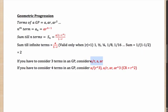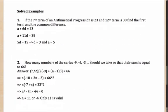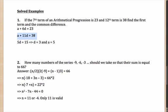Now let's look at some solved examples. If the seventh term of an AP is 23 and the twelfth term is 38, find the first term and the common difference. The seventh term gives A + 6D = 23, and the twelfth term gives A + 11D = 38. Subtracting the first from the second: 5D = 15, so D = 3. Substituting back: A + 33 = 38, so A = 5.